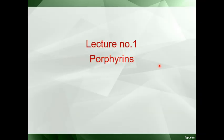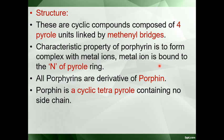We will start with porphyrins first. What are porphyrins? These are cyclic compounds made up of four pyrrole units linked by methanol bridges. A characteristic property of porphyrin is to form complexes with a metal atom. The metal ion is bonded to the nitrogen of the pyrrole ring. All porphyrins are derivatives of porphyrin, which is a cyclic tetrapyrrole containing no side chain.